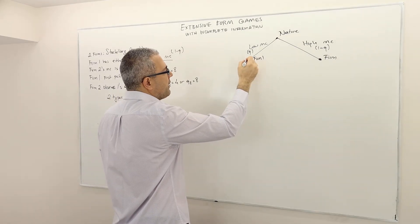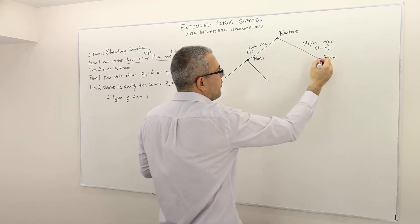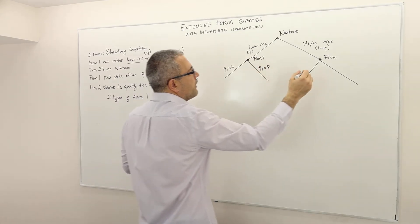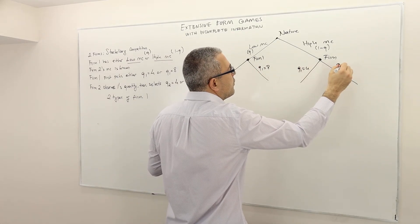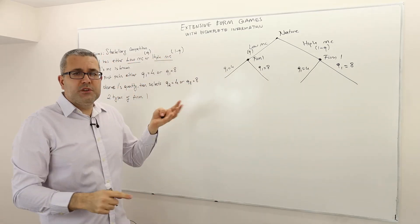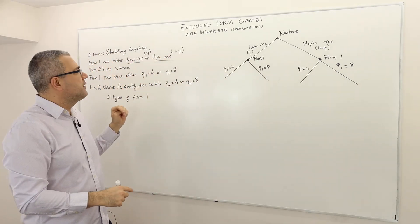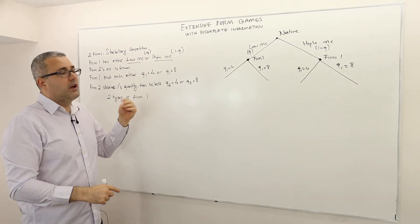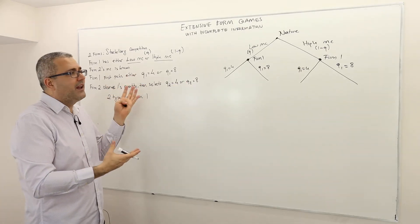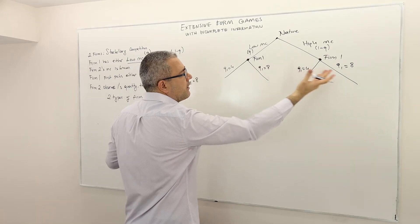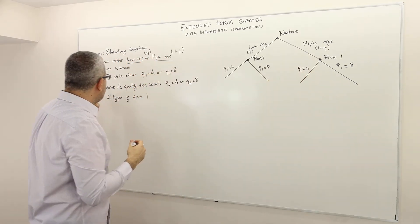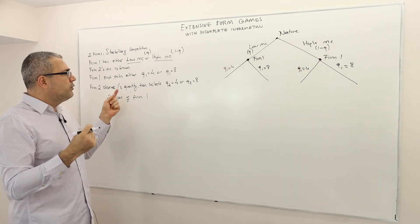So firm 1 chooses its quantity. There are two options for firm 1. It's either q1 equals 4 units or q1 equals 8 units. Whether firm 1 is a low type or high type, those choices are there. We assume according to this question a high cost firm for example doesn't have different strategy choices. If it had well then I would definitely incorporate them here as strategies.